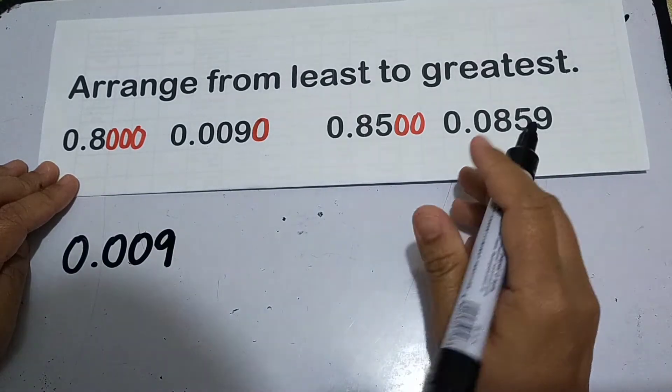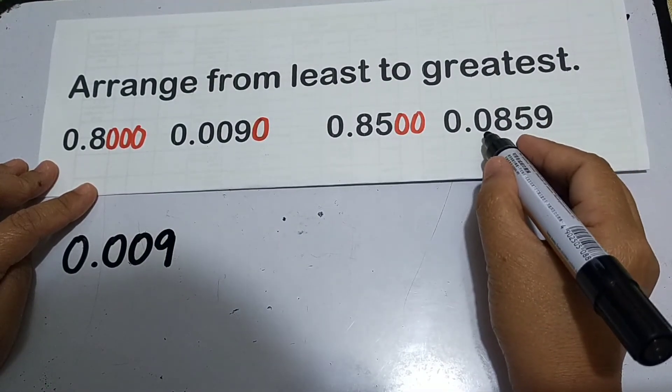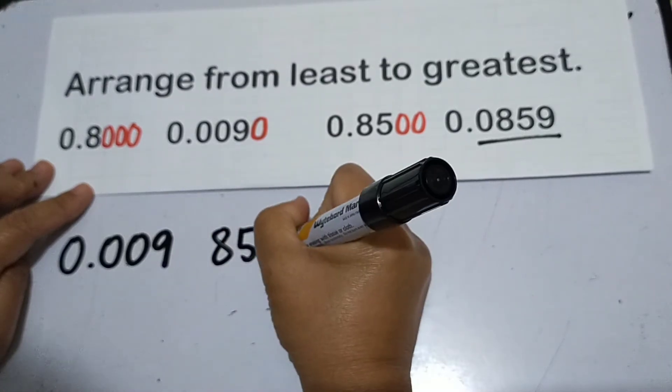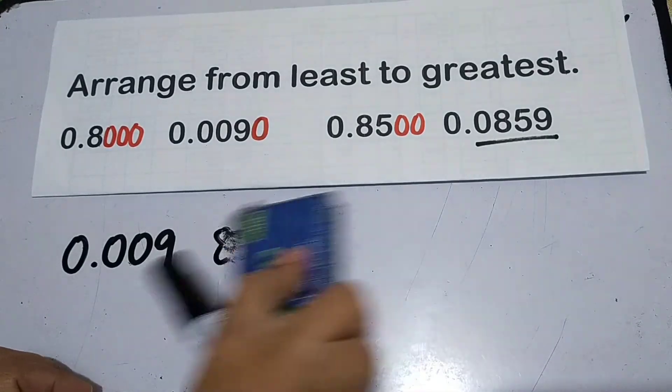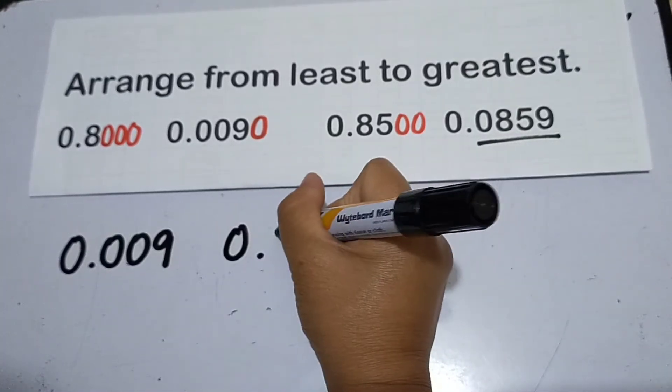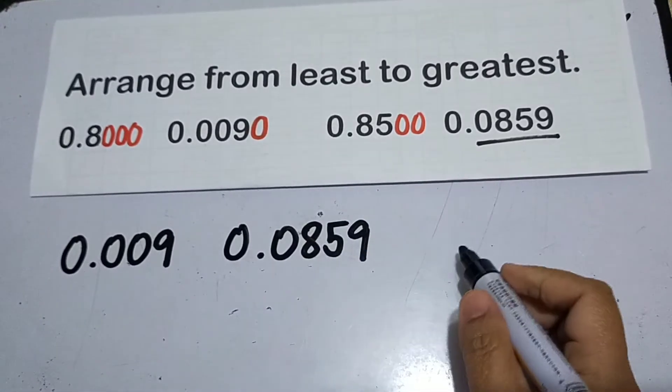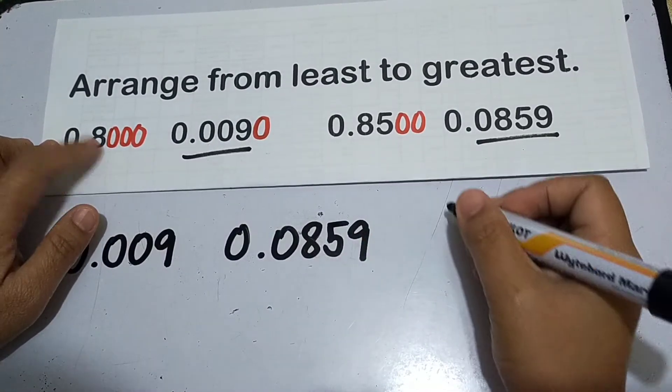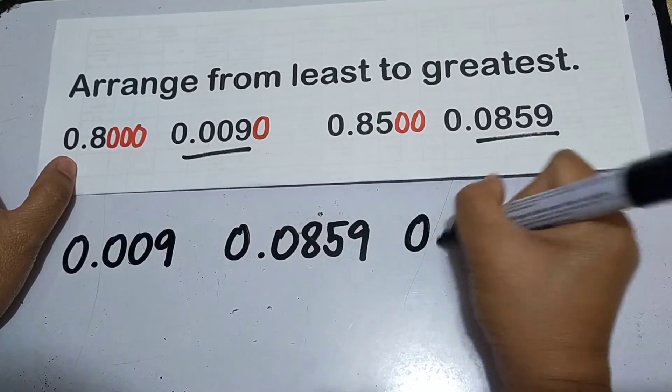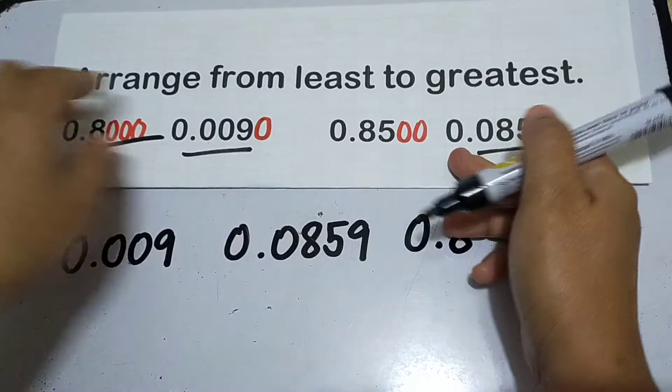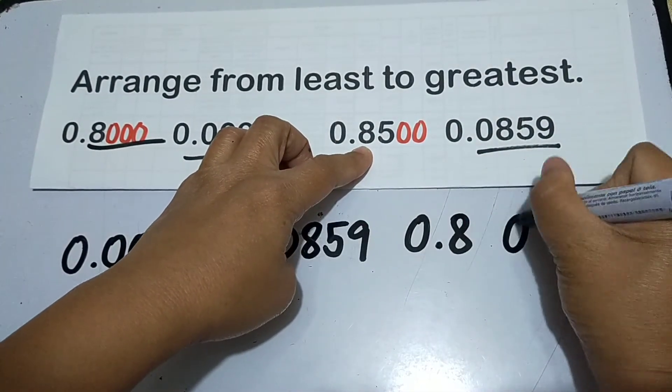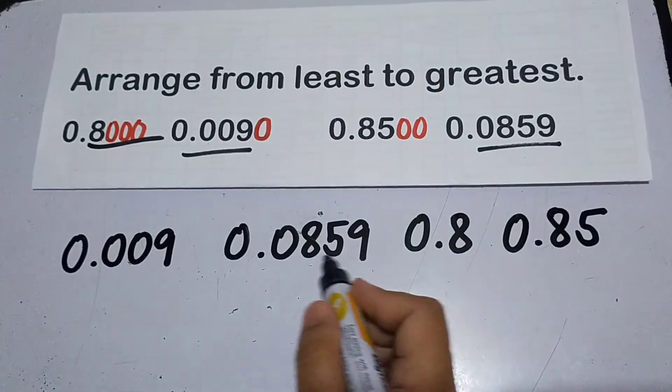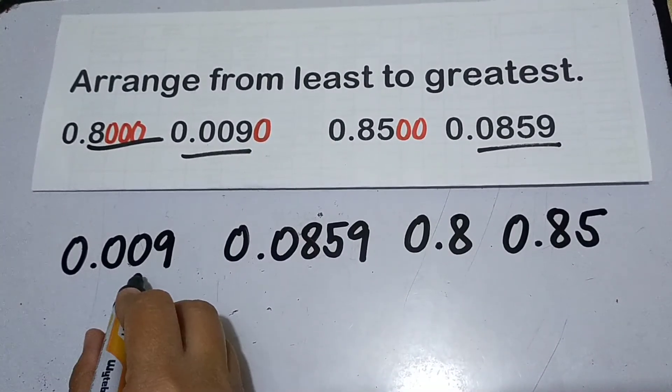Ano yung kasunod? So ang kasunod ay ito. 859 ten thousandths. And then, ano yung kasunod? Eto na, okay na to. Ang kasunod ay eto. 8 tenths. Kapag nilagyan natin ng imaginary zero, 8 thousand ten thousandths. Pero ang sulat mo lang ay 8 tenths. Eto na lang yung wala. Eto siya, 85 hundredths. Pag may imaginary zero siya, 8 thousand 500 ten thousandths. So eto na yung pagkaka-arrange ng decimal numbers from least to greatest.